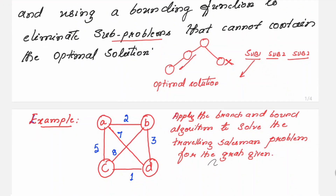The problem will be given as a graph. This graph has vertices and edges — each vertex represents a city, and the salesperson has to travel from one city to another. Suppose he starts from city A; he has to visit all other cities B, C, and D, and come back to city A. While visiting all the remaining cities, he has to choose a path with minimum distance. You need to apply the branch and bound algorithm to solve this traveling salesman problem.